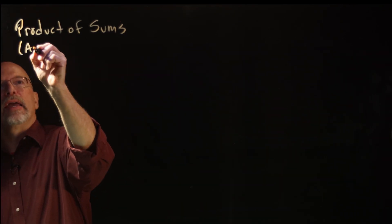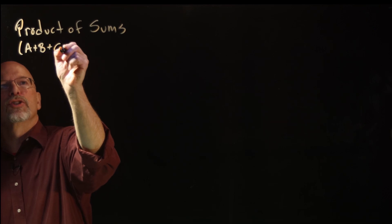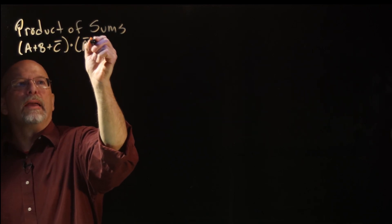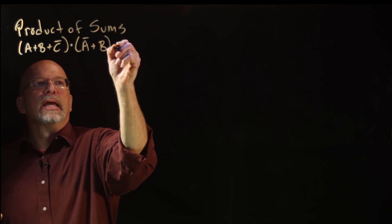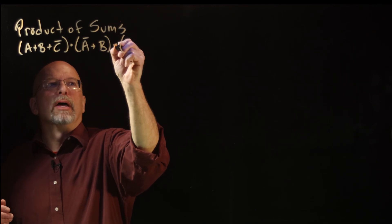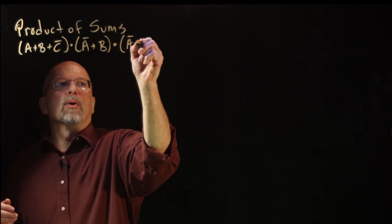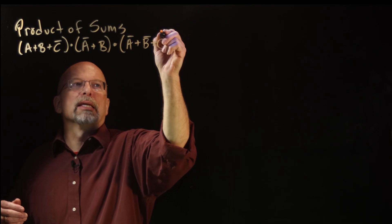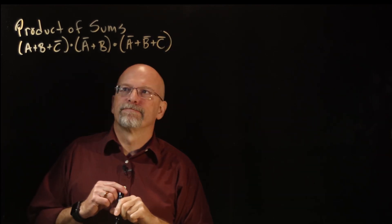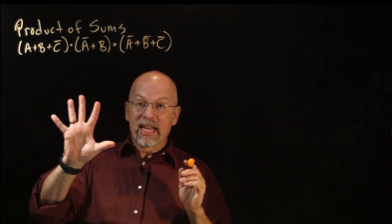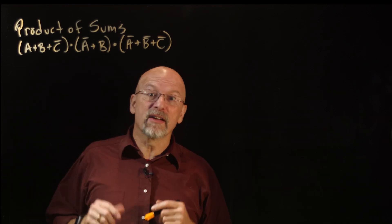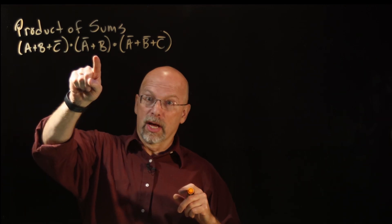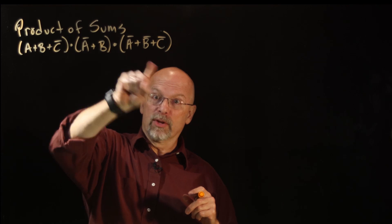We've got: A or B or C̄, ANDed with Ā or B, ANDed with Ā or B̄ or C. That is a product of sums expression — we have a sum ANDed with a sum ANDed with a sum.